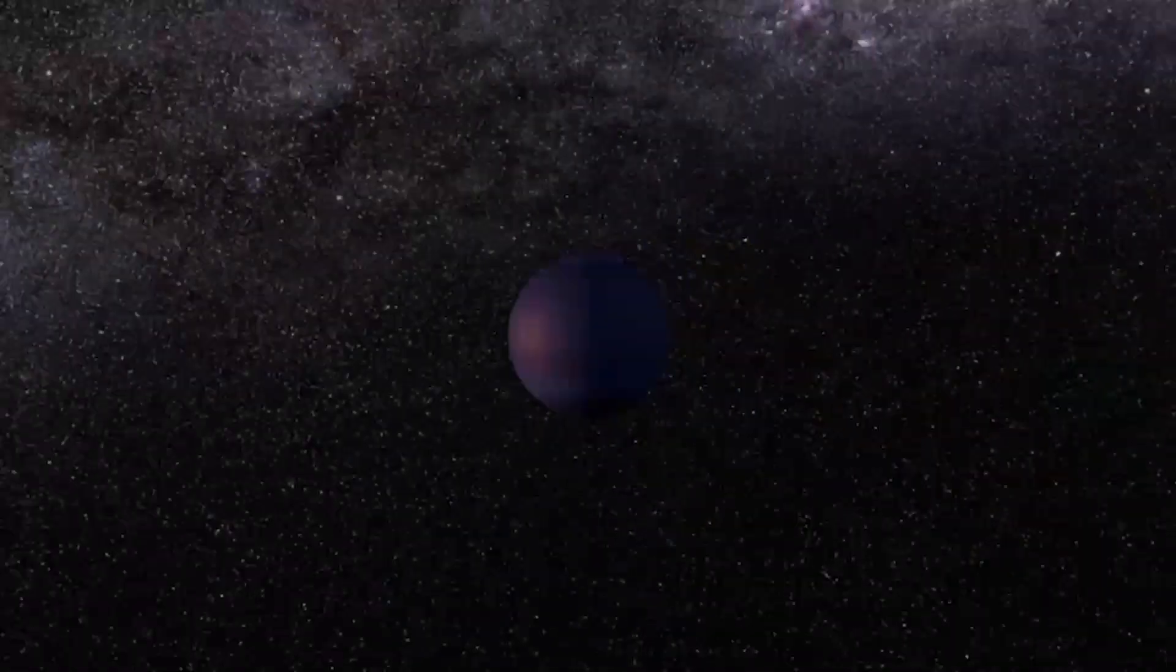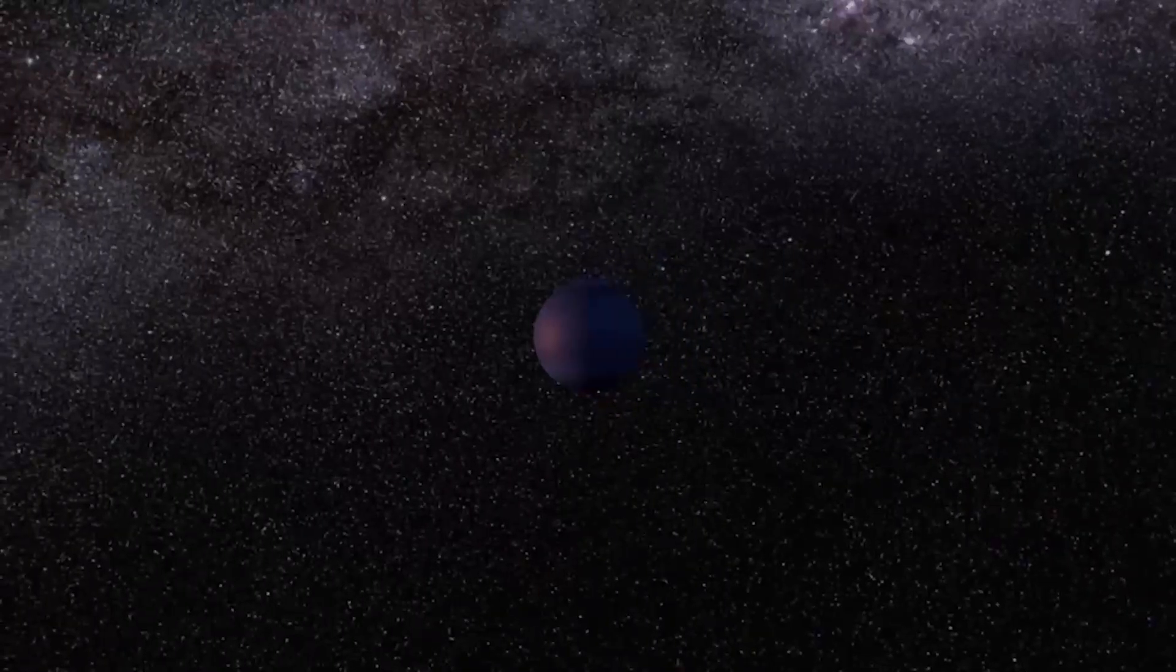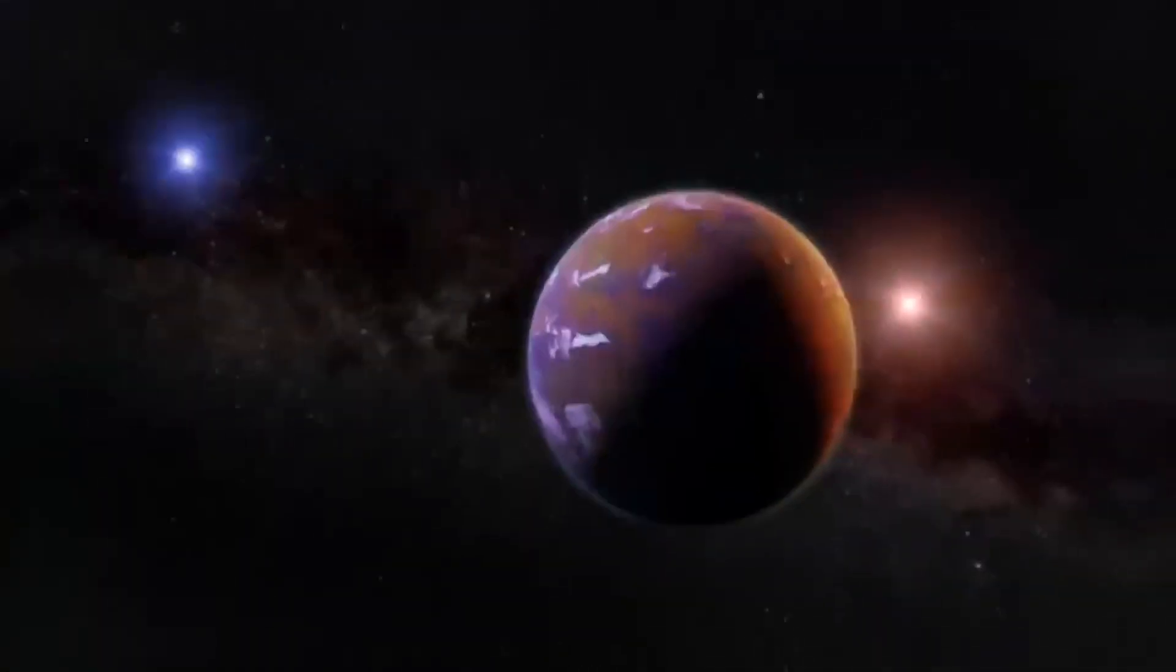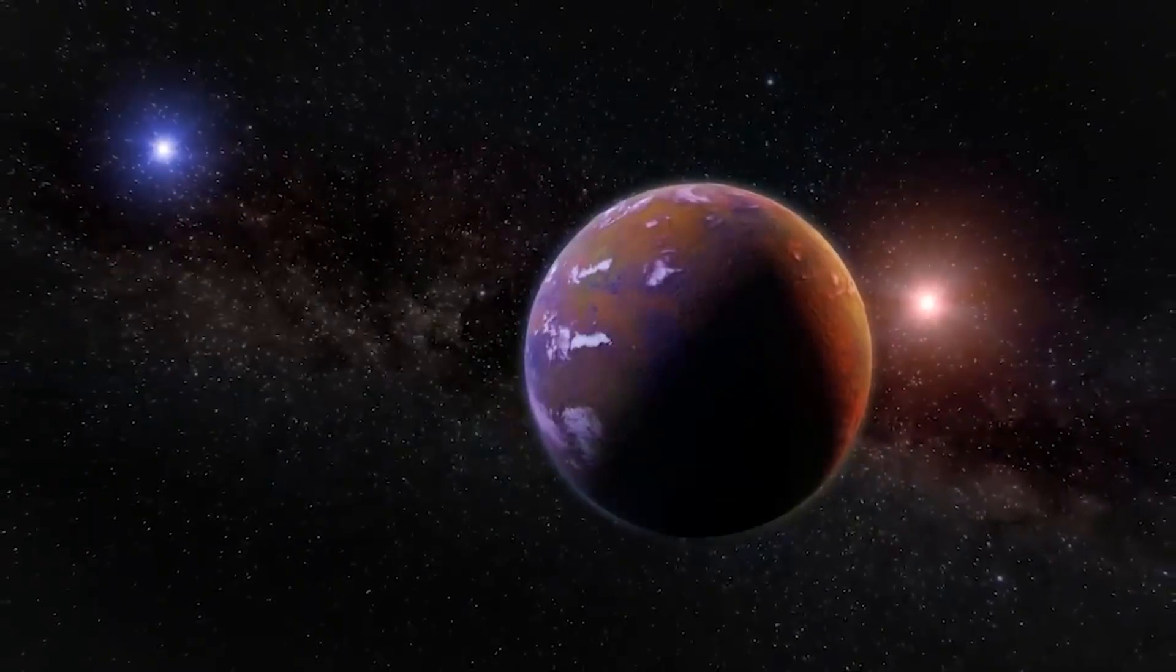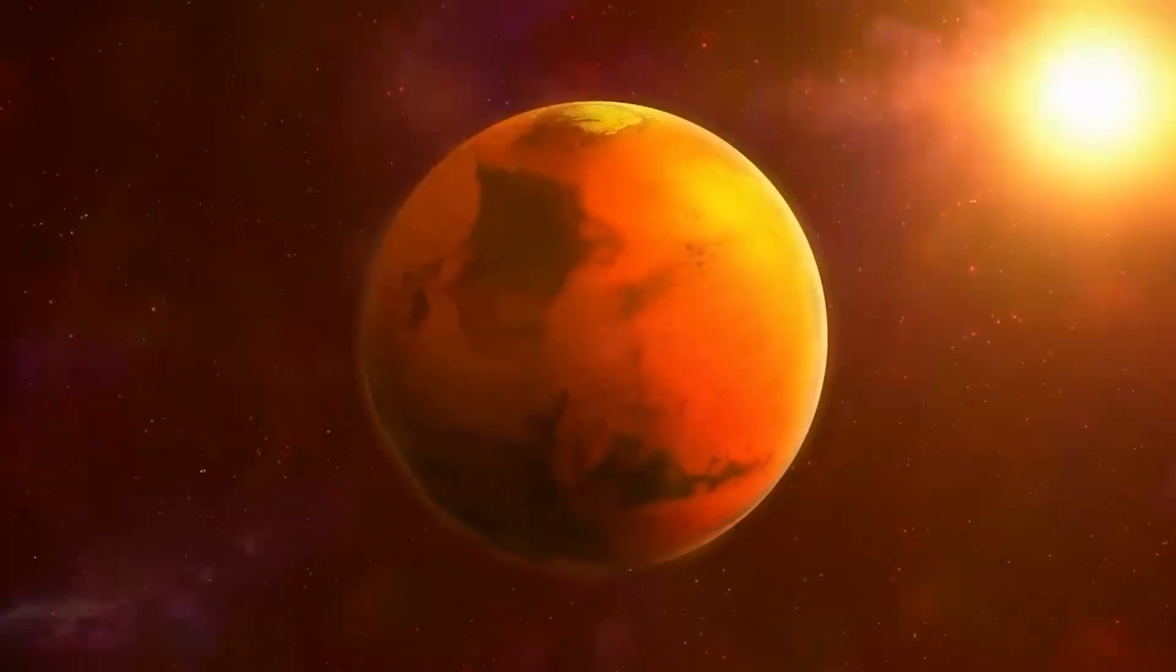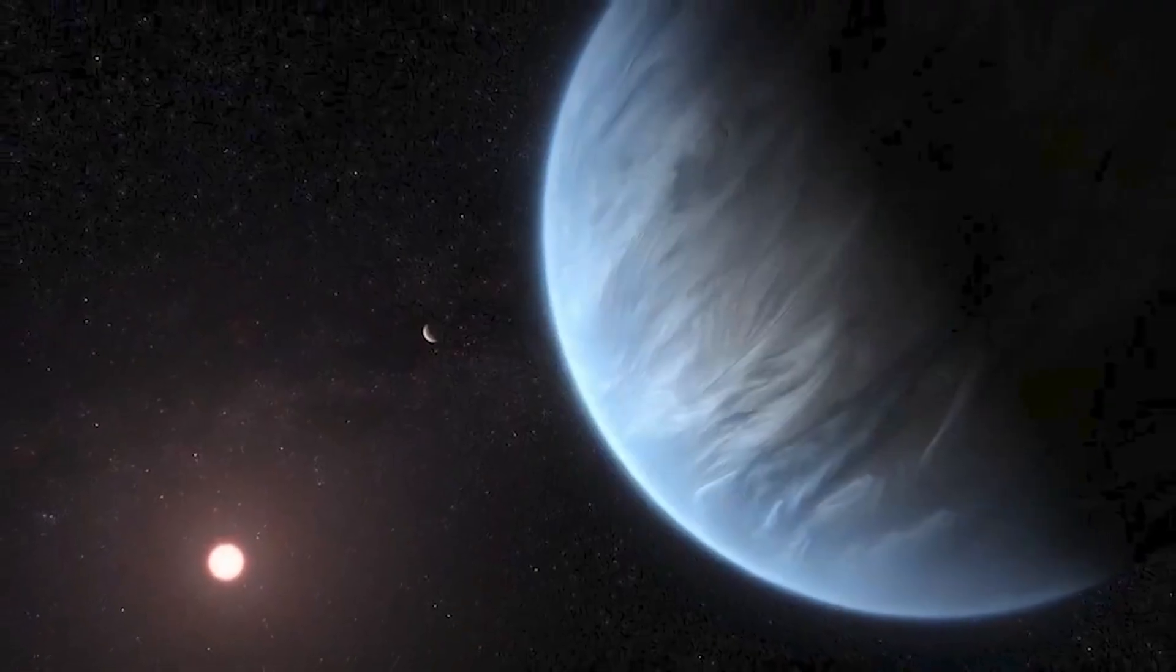As for Proxima c, scientists are still anticipating discovering more, which is no easy feat because Proxima c takes over 5 years to orbit its star. Scientists do know, however, that it is a super-Earth or mini-Neptune and it lies outside the habitable zone.